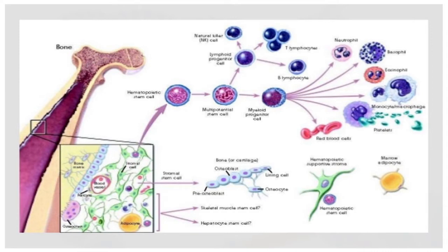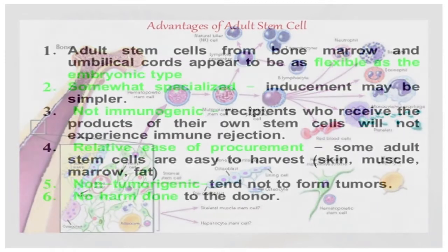Hematopoietic stem cells are pluripotent stem cells. These differentiate into multipotent cells including myeloid progenitor cells and lymphoid progenitor cells. Myeloid progenitor cells give rise to neutrophils, basophils, eosinophils, monocytes, and platelets — specific cell types that belong to a specific lineage. Multipotent stem cells also give rise to lymphoid progenitor cells, which produce lymphocytes and natural killer cells.